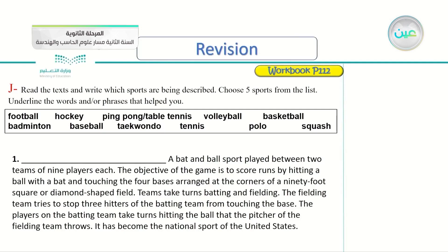Number 1. A bat and ball sport played between two teams of nine players each. The objective of the game is to score runs by hitting a ball with a bat and touching the four bases arranged at the corners of a 90-foot square or diamond-shaped field. Teams take turns batting and fielding. The fielding team tries to stop three hitters of the batting team from touching the base. The players on the batting team take turns hitting the ball that the pitcher of the fielding team throws. It has become the national sport of the United States.